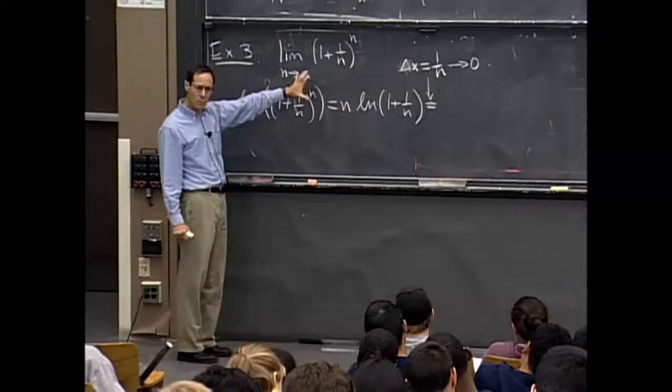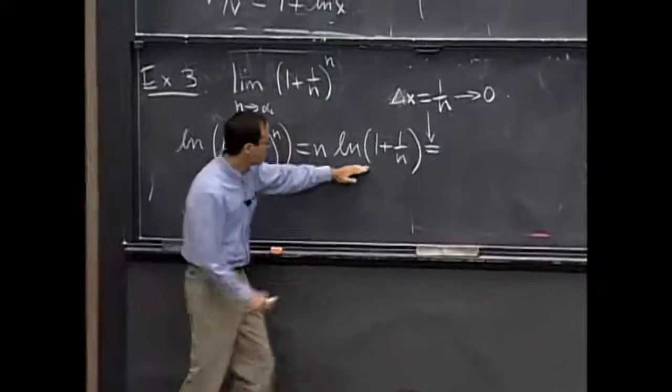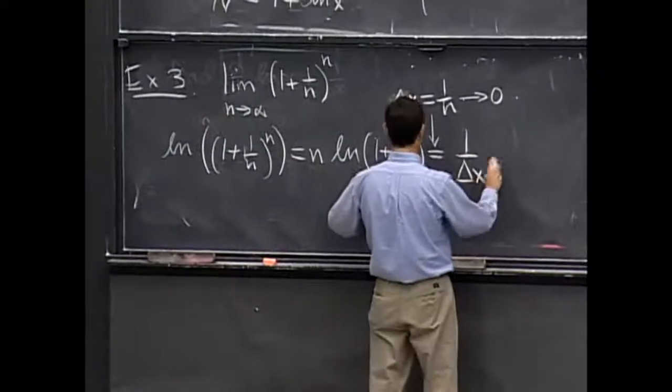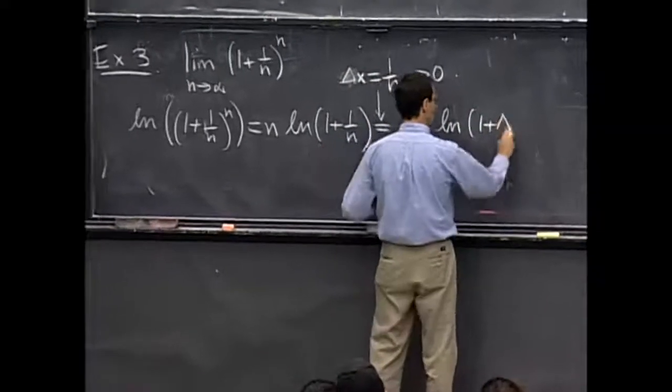So this is more familiar territory for us in this class anyway. So let's rewrite it. So here we have 1 over delta x, and then that is multiplied by log of 1 plus delta x.